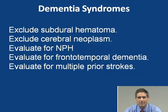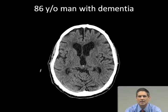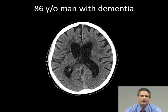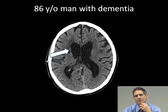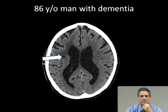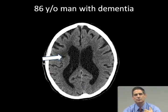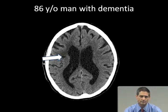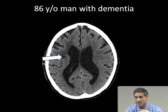The American Academy of Neurology recommends CT or MR in the routine initial evaluation of all patients with dementia. MR can exclude subdural hematoma, cerebral neoplasm, and evaluate for disproportionate distension of lateral ventricles relative to sulci suggesting normal pressure hydrocephalus, disproportionate frontal lobe atrophy suggesting frontotemporal dementia, and multiple prior strokes suggesting vascular dementia. Most studies will show non-specific generalized atrophy, since that's the most common finding in Alzheimer's disease. FDG PET scanning may distinguish Alzheimer's from frontotemporal dementia but lacks therapeutic imperative outside research settings.